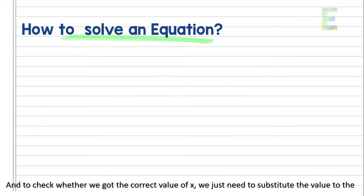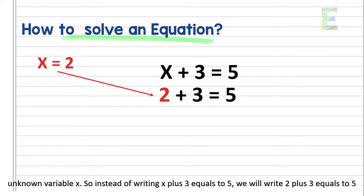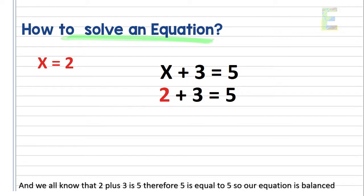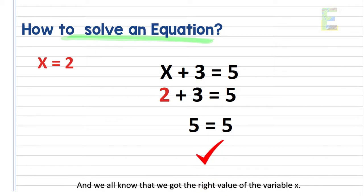To check whether we got the correct value of x, we just need to substitute the value to the unknown variable x. So instead of writing x plus 3 equals to 5, we will write 2 plus 3 equals to 5. And we all know that 2 plus 3 is 5. Therefore, 5 is equal to 5, so our equation is balanced, and we got the right value of the variable x.